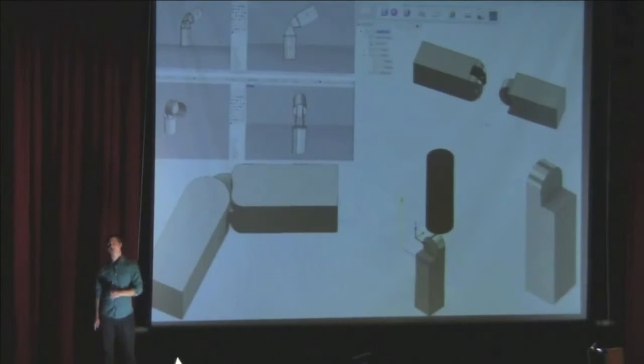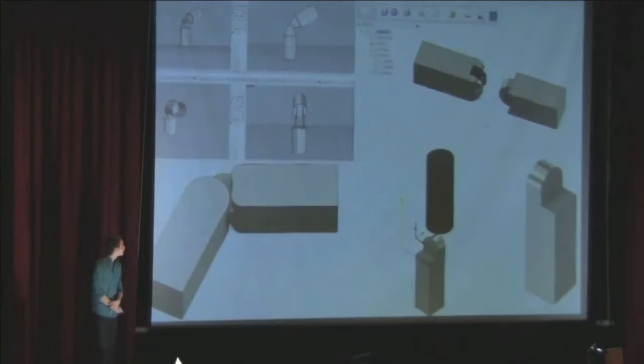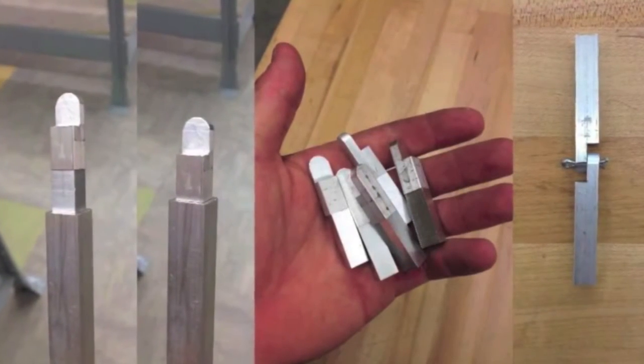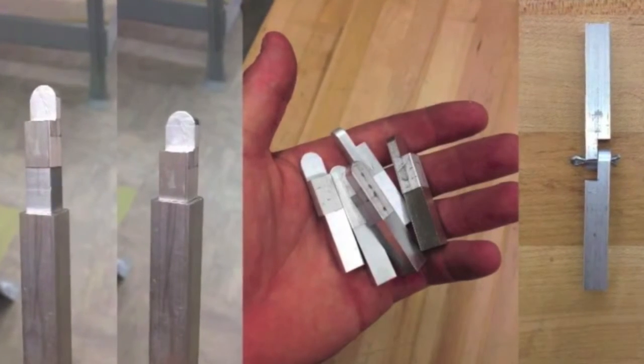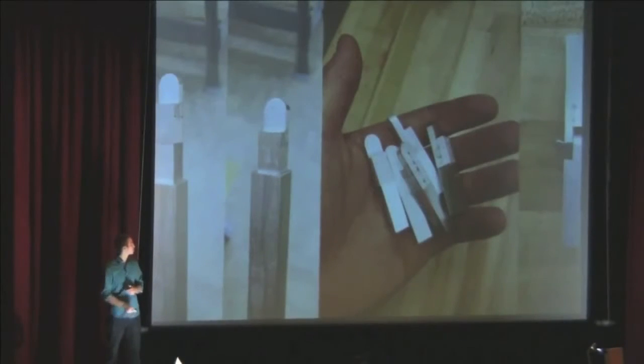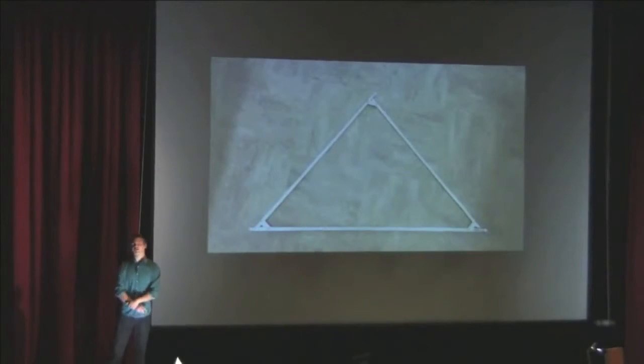But it does get better. Recently, I figured out some of the relationship issues I was having with the CNC machine, or the CNC machine was having with me, probably both, and I started milling parts. As I became more fluid with the machining process, those parts started coming out faster and faster, and then started connecting to longer parts. And finally, I was making progress.